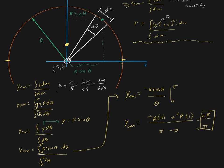To verify that x_cm = 0, go back to the same setup but for the x-dimension: x_cm = ∫x dθ / ∫dθ, where x = r cosθ. When you integrate r cosθ from 0 to π and evaluate, you get 0. That is left as an exercise to confirm that the center of mass lies on the y-axis.